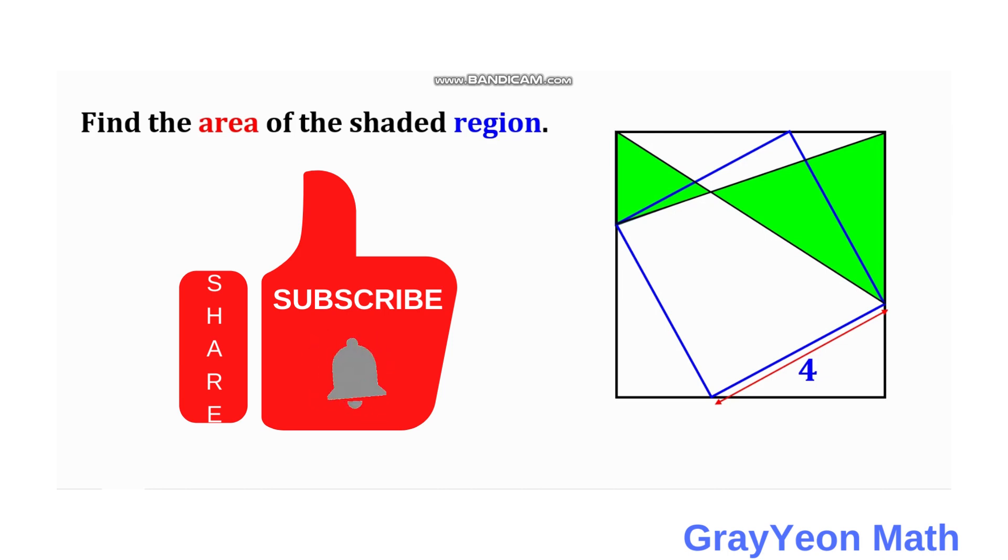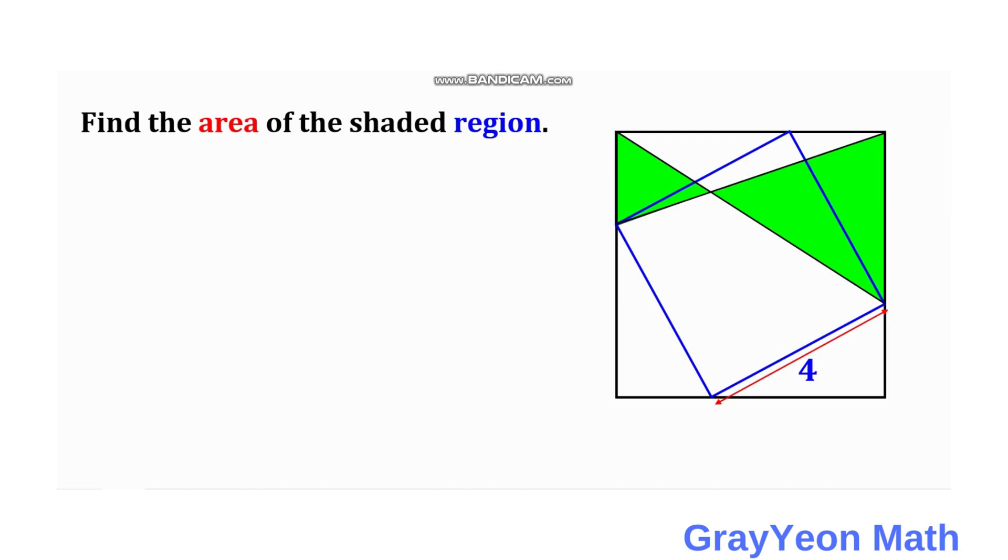Okay, so first thing that we need to do is we can label this length. This is actually a right triangle, and you can label this as a and this as b. And this is a also because the sum should be a plus b.